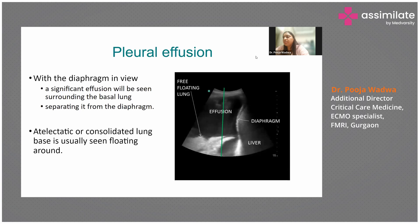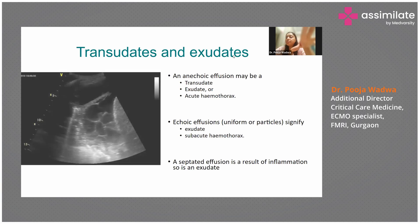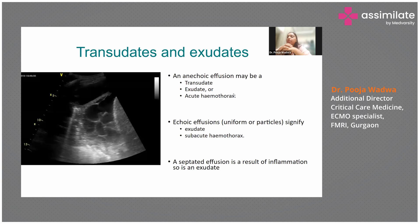This image shows an effusion — you can differentiate the liver, the diaphragm, and the freely floating lung, which was surrounded by effusion on all sides. For differentiation between transudate and exudate: an anechoic effusion may be transudate, exudate, or acute hemothorax. An effusion with echoic shadows signifies exudate or subacute hemothorax due to blood clotting. Septated effusion is usually the result of inflammation and is always an exudate.